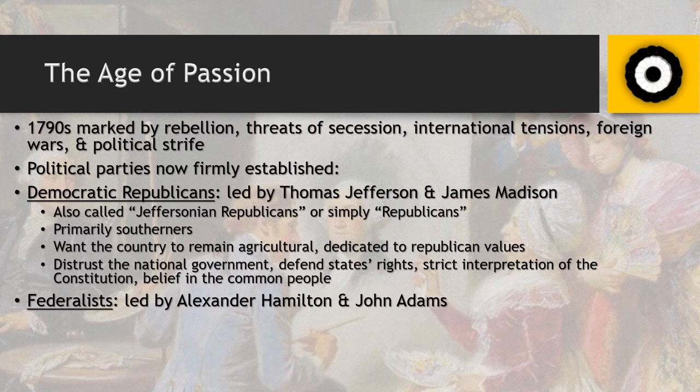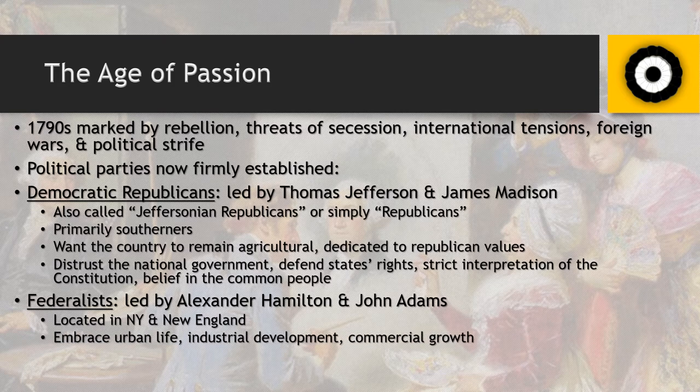On the other side, we have the Federalists, led by Alexander Hamilton and John Adams — John Adams being the first president to actually side with a specific political party. The Federalists are geographically located in the North, and the country is already divided along north-south political lines from the very beginning. The Federalists favor urban life, cities, industry, and commercial growth. They're more merchant-oriented, and most aspects of the Industrial Revolution begin in or affect the North disproportionately.